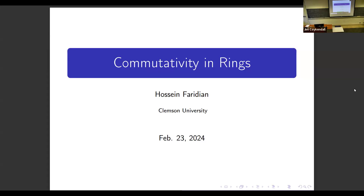If every non-zero element in a ring has an inverse — is a unit — then we call that ring a division ring. And if the division ring is commutative, we call it a field. For example, the rational, real, and complex numbers are fields, but the integers are not. Z_p where p is prime is a field.